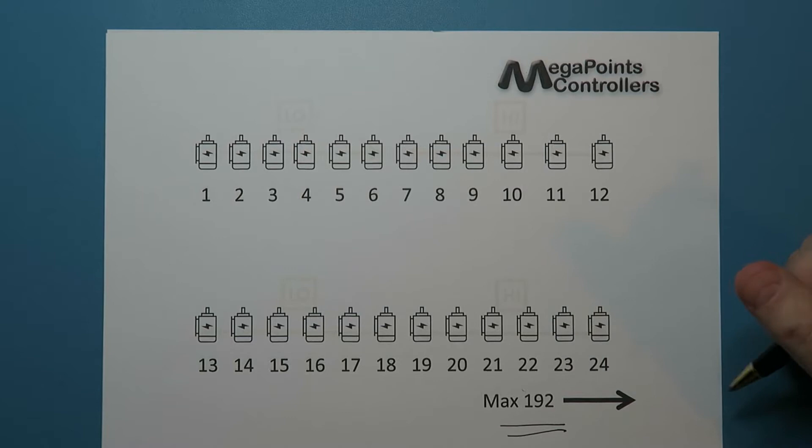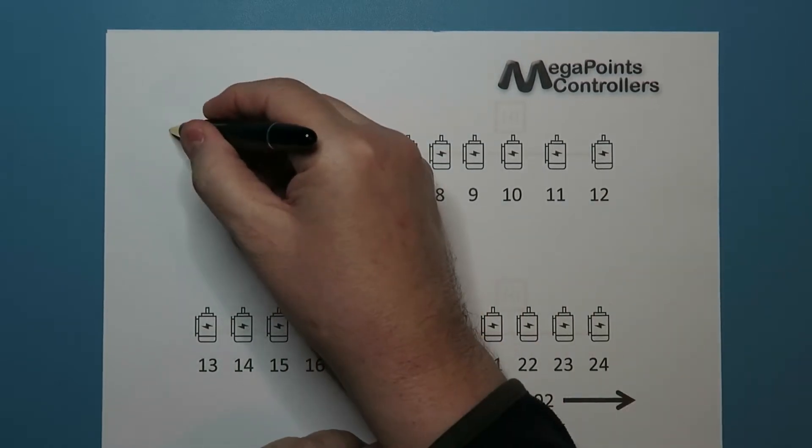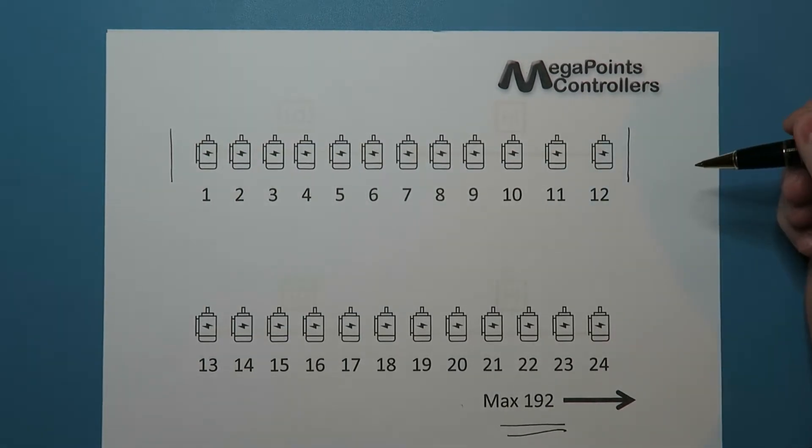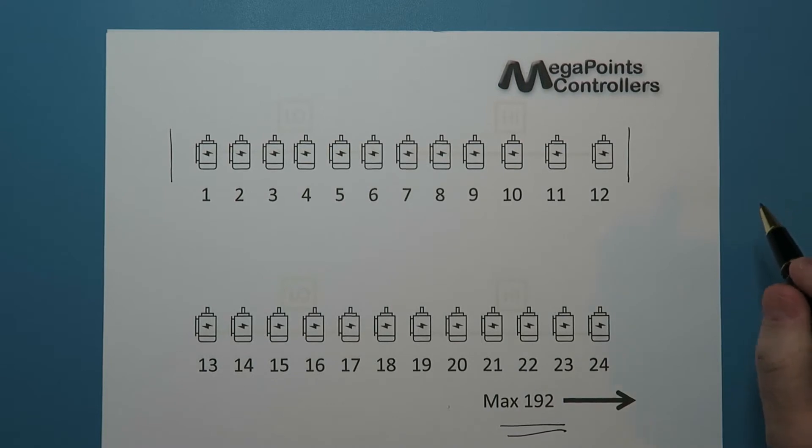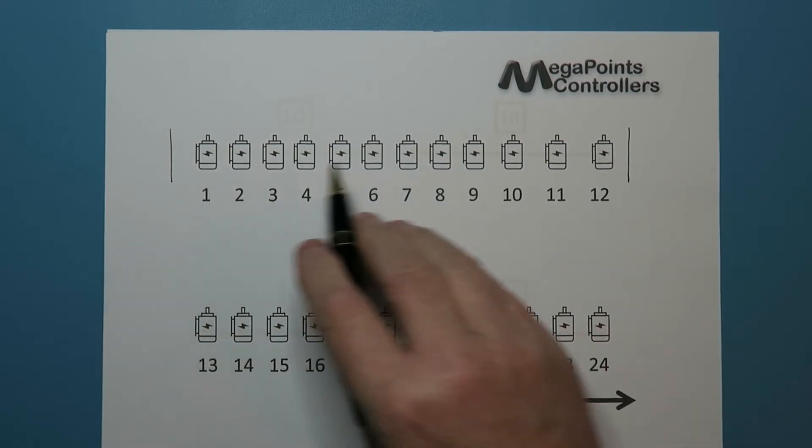Now the way our system works, because of the original servo controller, it used to do blocks of 12. So when you set an address up for the first one, it would start at number two and give you 12 devices.